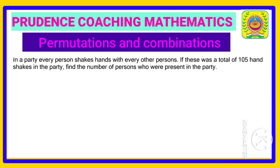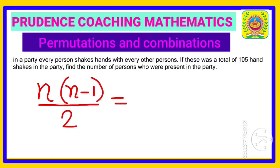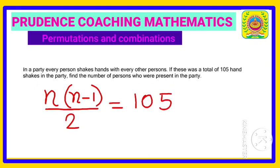We know one easy formula. If the number of persons is n, then with this n we need to multiply n minus 1, that is number of persons minus 1, and divide this by 2. You will get the total number of handshakes. And here it is given 105 handshakes total. So if we find out n, that is the total number of persons, then we can get the answer.